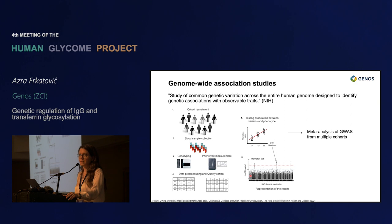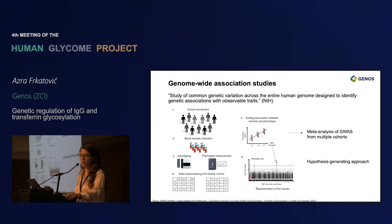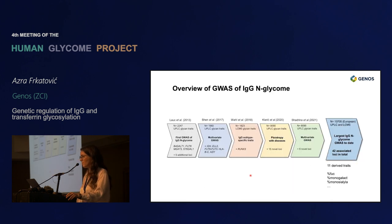One good thing about genome-wide association studies is that we can easily do a meta-analysis of several studies. In that way, we increase the sample size and also increase the statistical power to detect novel associations with our phenotype. Genome-wide association studies are a hypothesis-generating approach, so we are not necessarily testing hypotheses but rather exploring the genome to find candidate genes, which can later be used in hypothesis-testing approaches such as functional studies in vitro or in vivo models to prove that a gene has a specific function in this pathway.